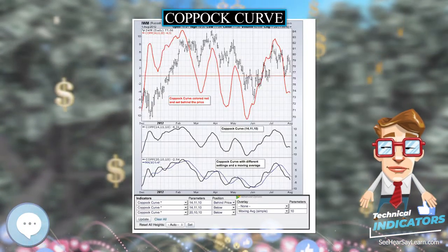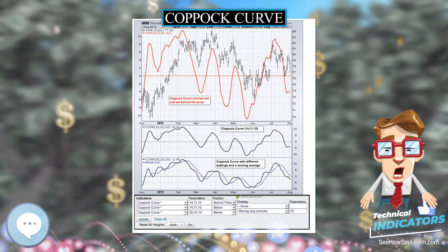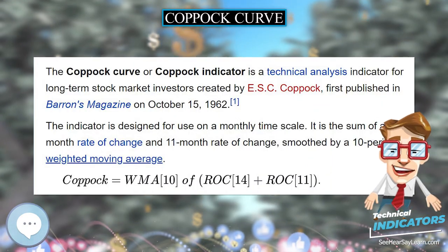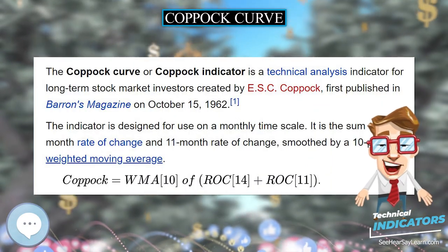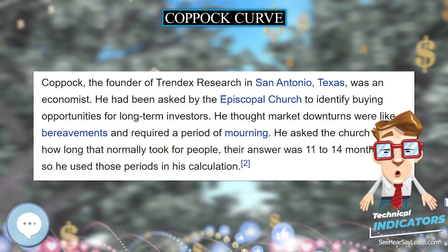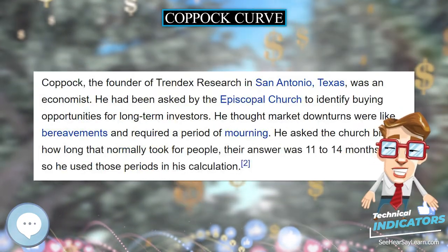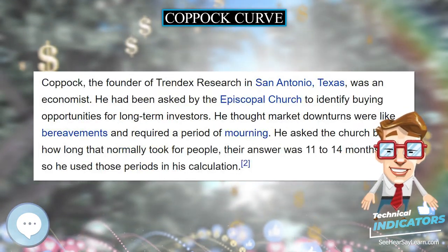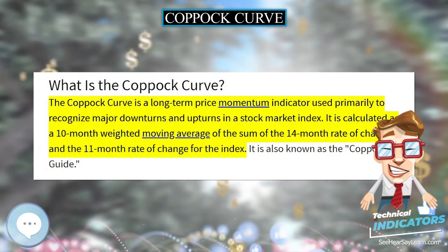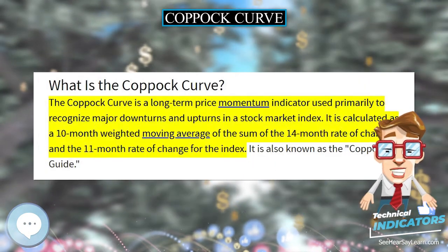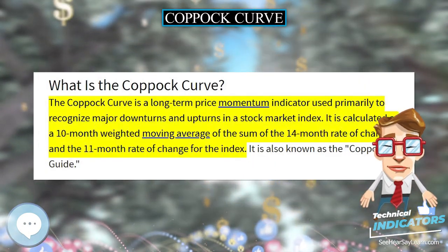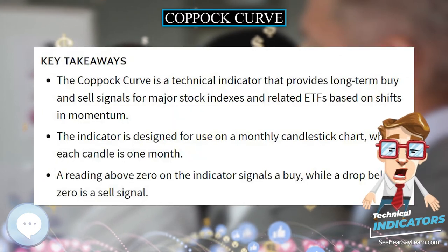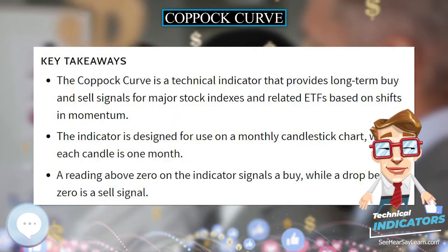Coppock designed the indicator — originally called the Trendick's Model — for the S&P 500 index, and it has been applied to similar stock indexes like the Dow Jones Industrial Average. It is not regarded as well suited to commodity markets, since bottoms there are more rounded than the spike lows found in stocks.